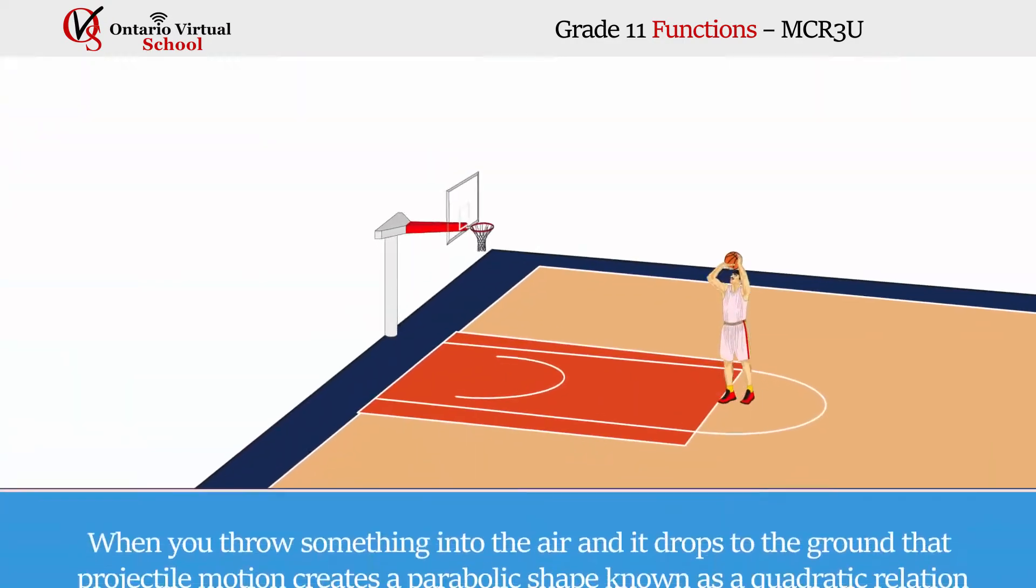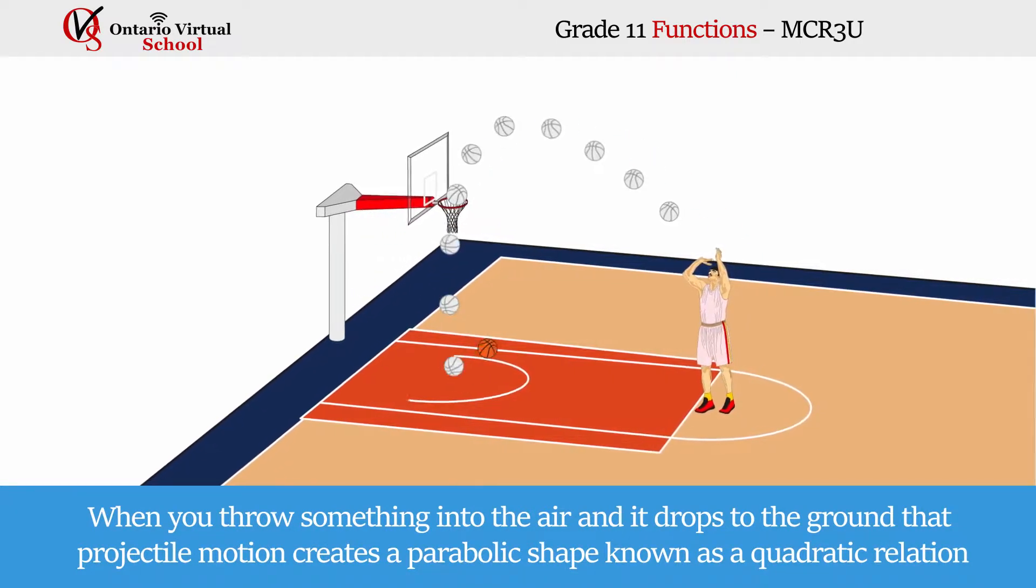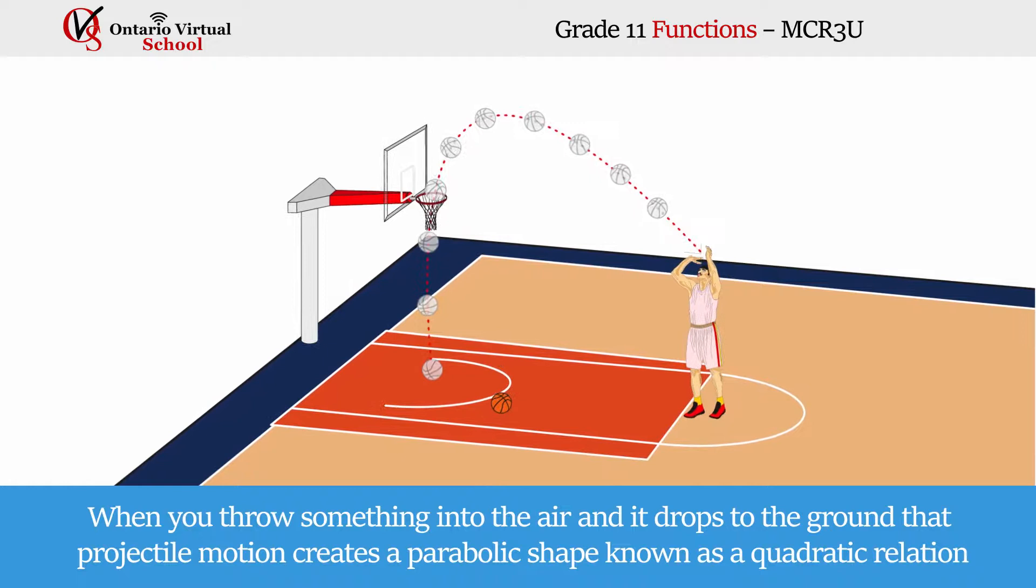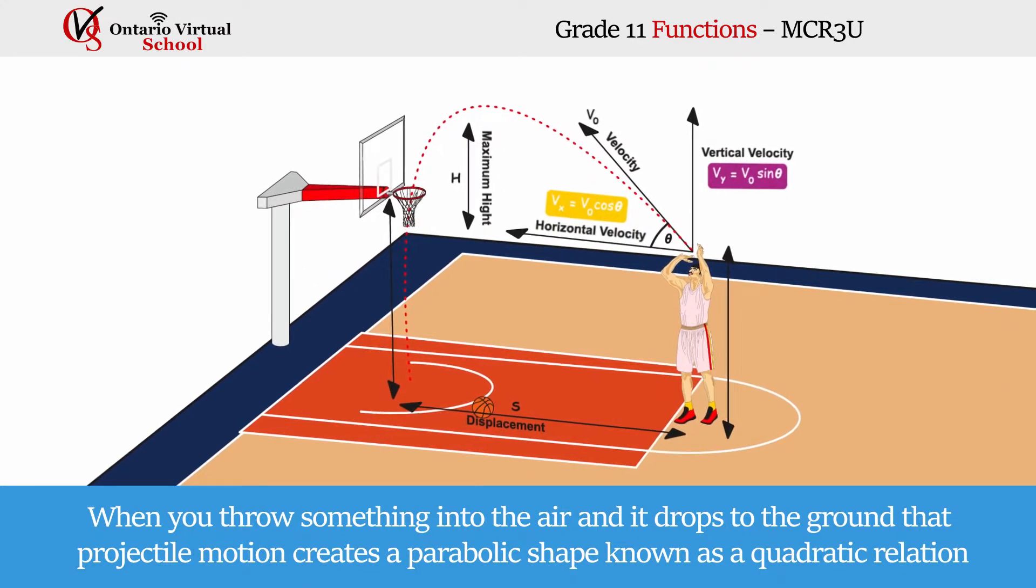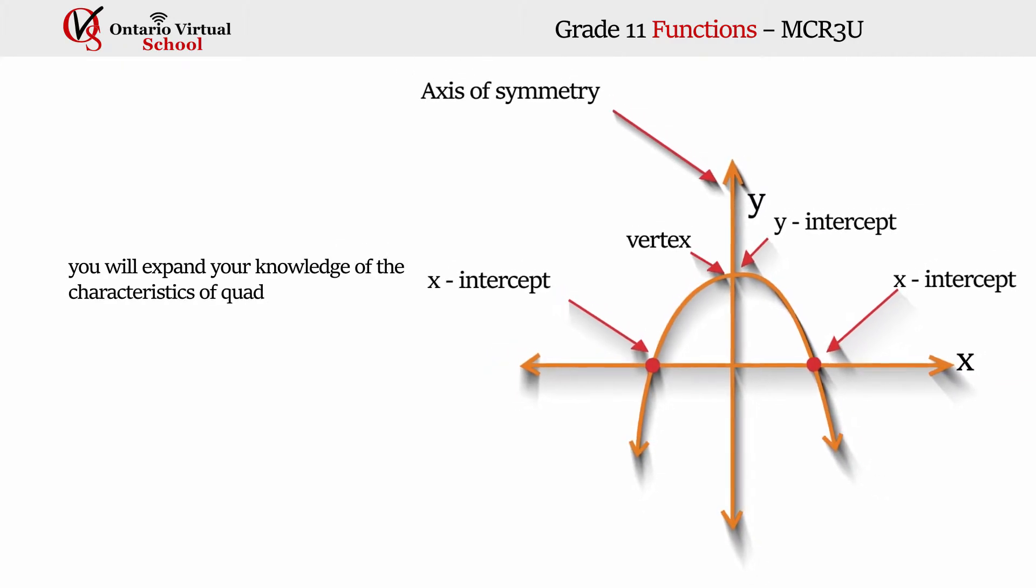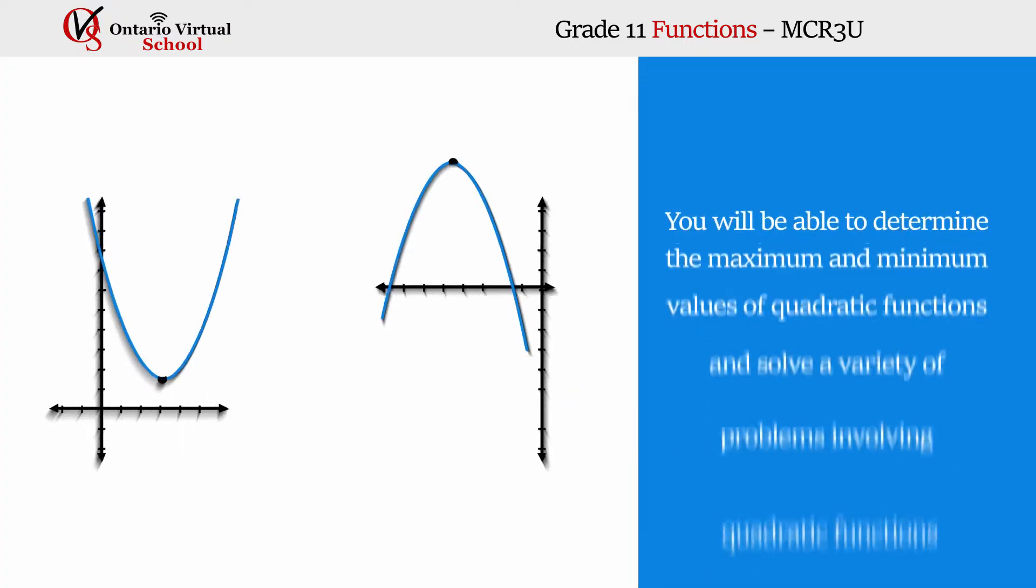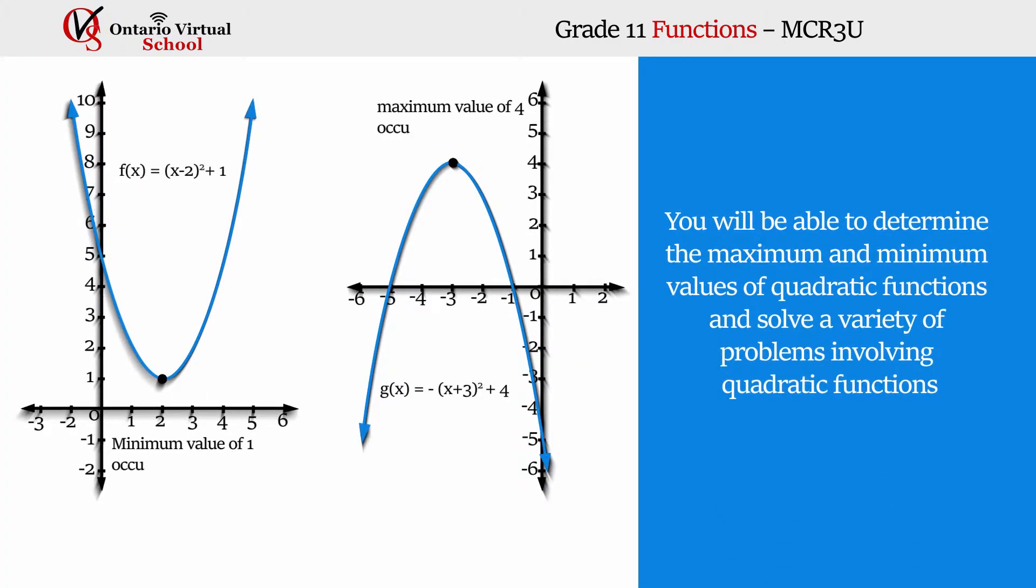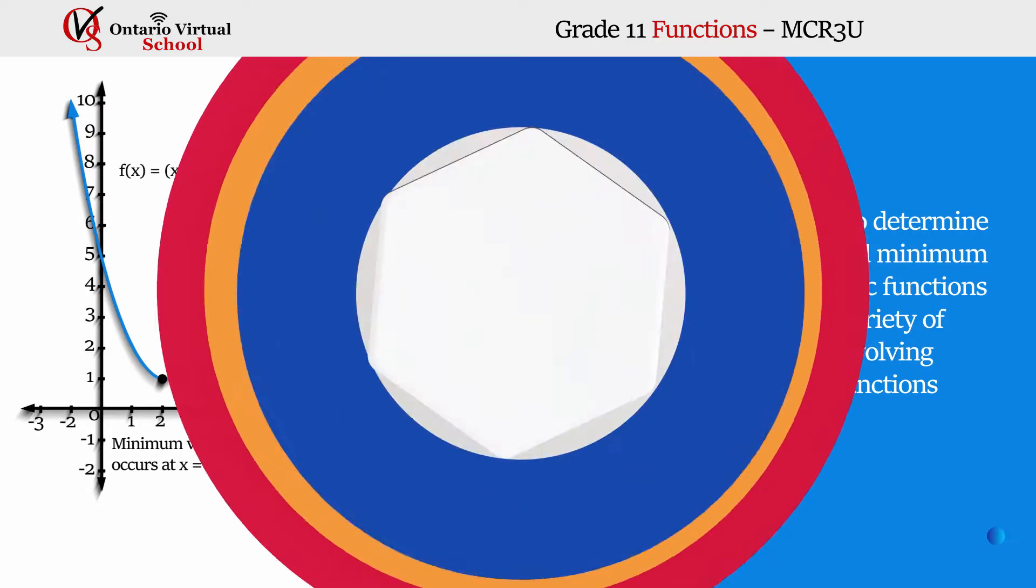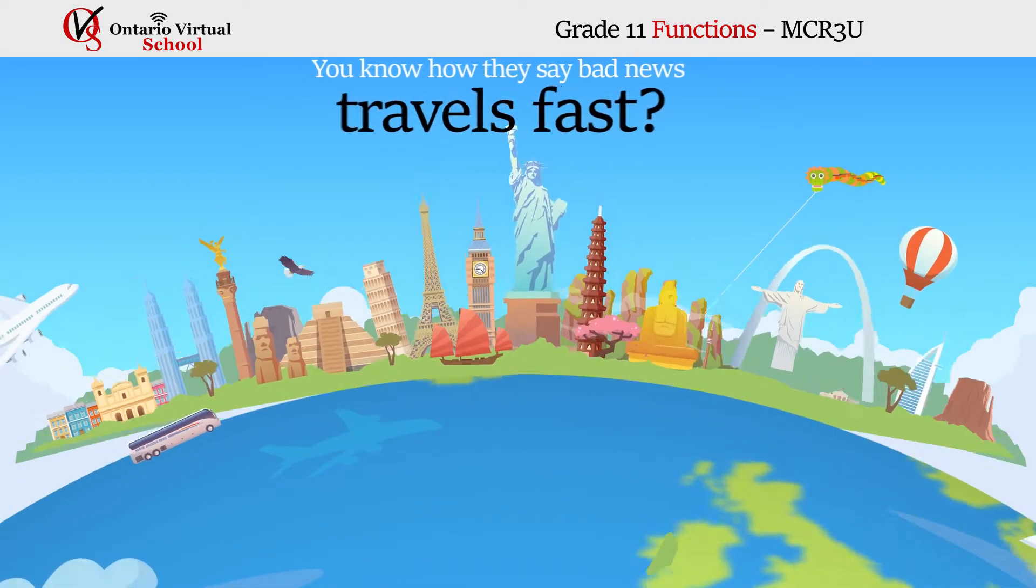When you throw something into the air and it drops to the ground, that projectile motion creates a parabolic shape known as a quadratic relation. In this unit, you will expand your knowledge of the characteristics of quadratic relations from grade 10. By the end of the unit, you will be able to determine the maximum and minimum values of quadratic functions and solve a variety of problems involving quadratic functions. Unit 4: Exponential Functions.